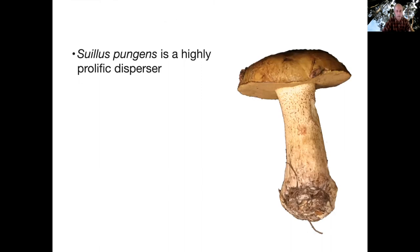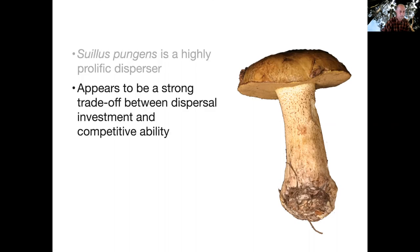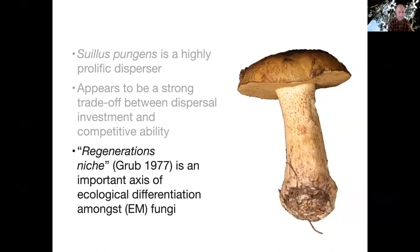Just to wrap this part of the talk: Suellis pungens is a great disperser, even compared with other ectomycorrhizal fungi in this system. By focusing on Suellis, where we get really detailed information, and since it's at the extreme end of the dispersal-competition spectrum, I think we can generalize this competition-colonization trade-off more widely across the fungal community. More broadly, there's this idea of a regeneration niche — defined by Grubb in 1977 to include all things necessary for successful reproduction, dispersal, and the kinds of environments that favor recruitment — which I think becomes a really important way in which ectomycorrhizal fungi differentiate themselves.